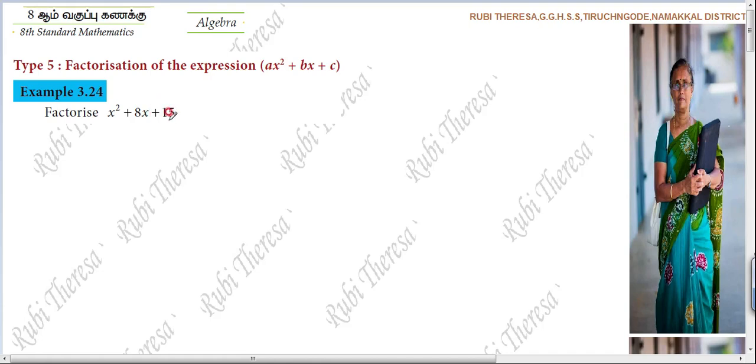First, you have to see the constant. Very good. Plus 15. Right? Coefficient of x. Coefficient of x is plus 8. Constant, coefficient of x. Constant is plus 15, coefficient of x is plus 8.